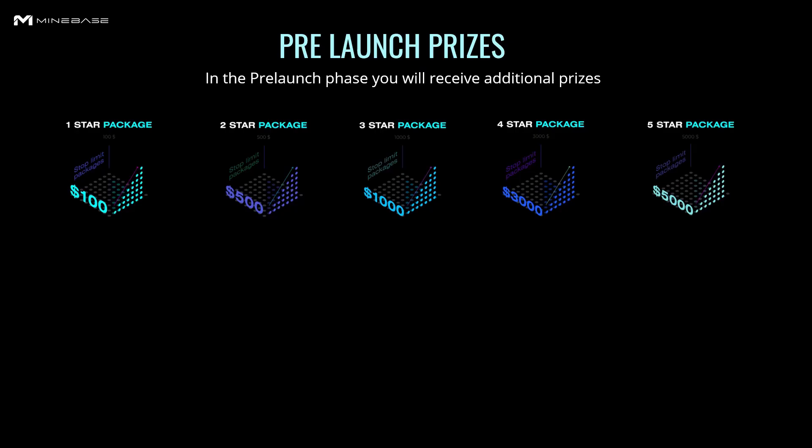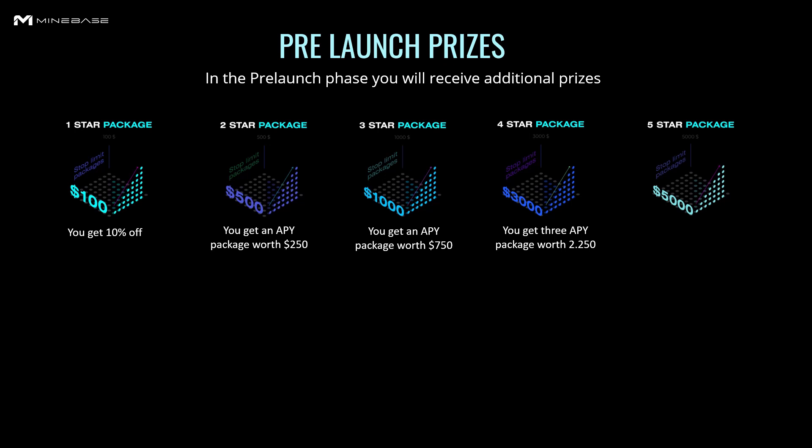You get per package in the pre-launch phase additional prizes or discounts. For the 1-star package you get 10% discount so you pay $90. For the 2-star package you get an additional API worth $250. For the 3-star package you receive an API worth $750. For the 4-star package you receive three APIs worth $2,250. And for the 5-star package you receive an API worth $5,000.